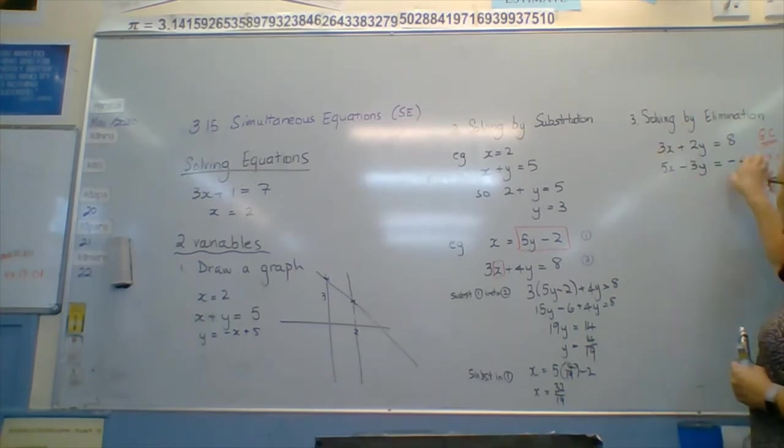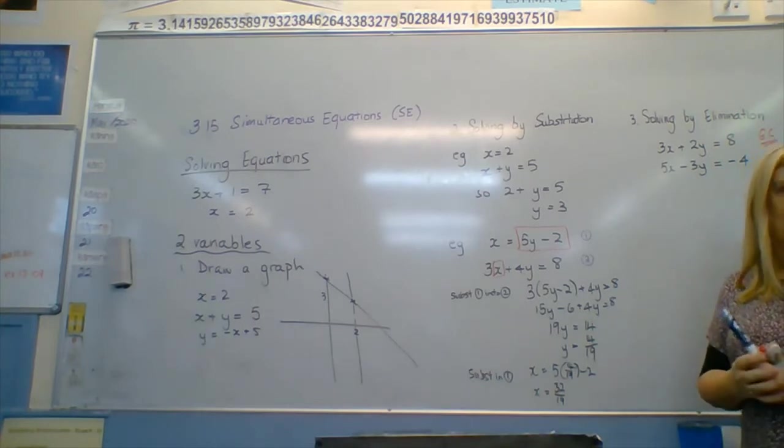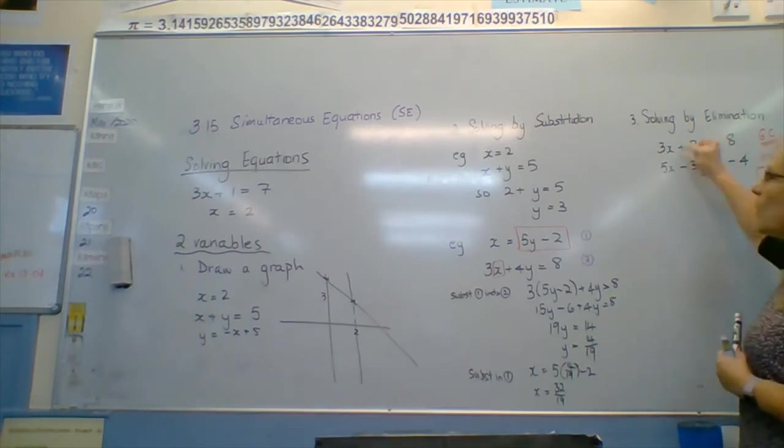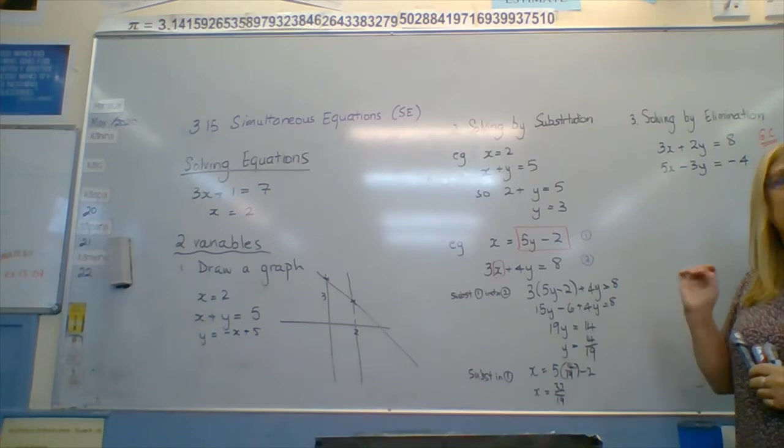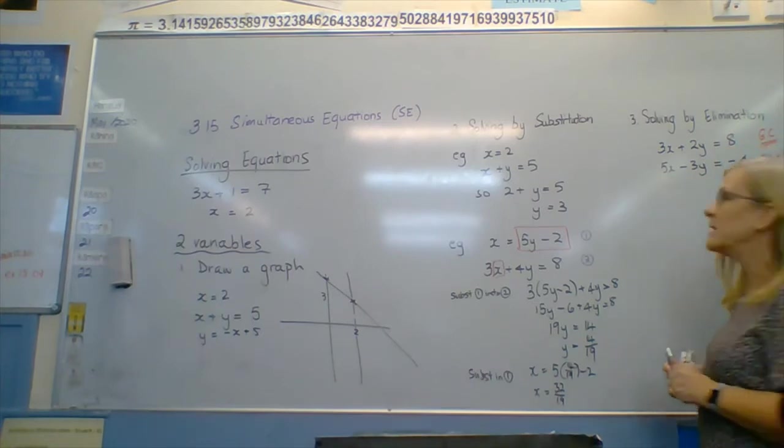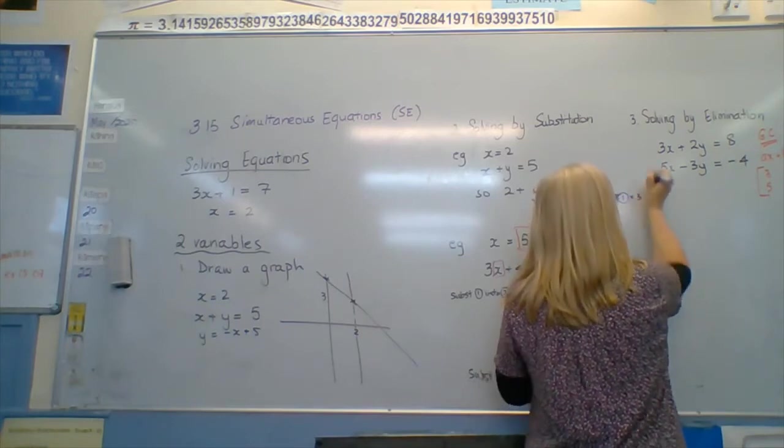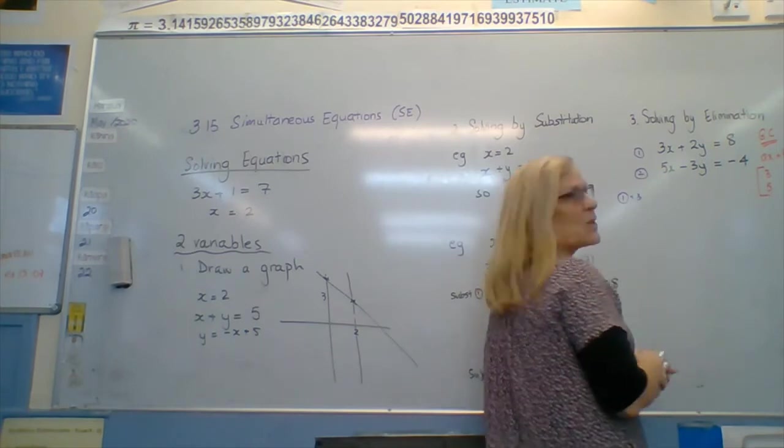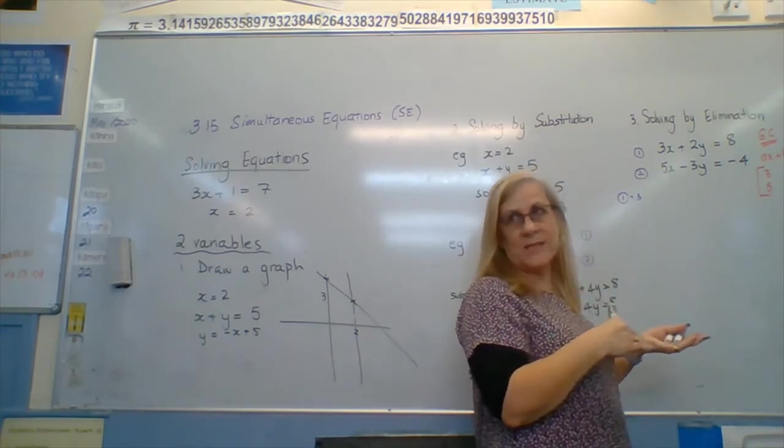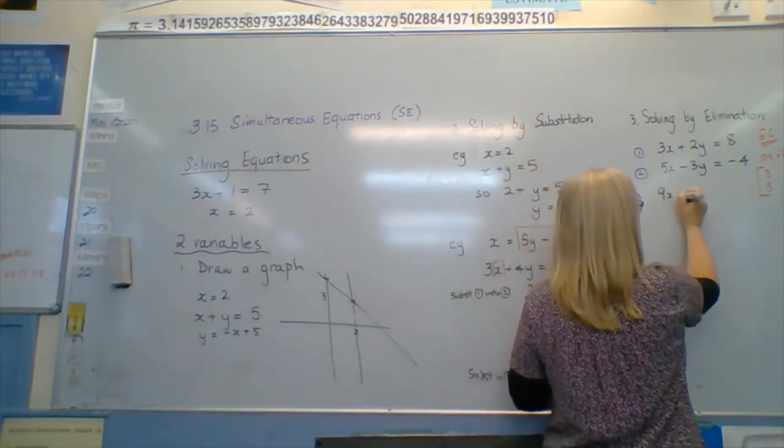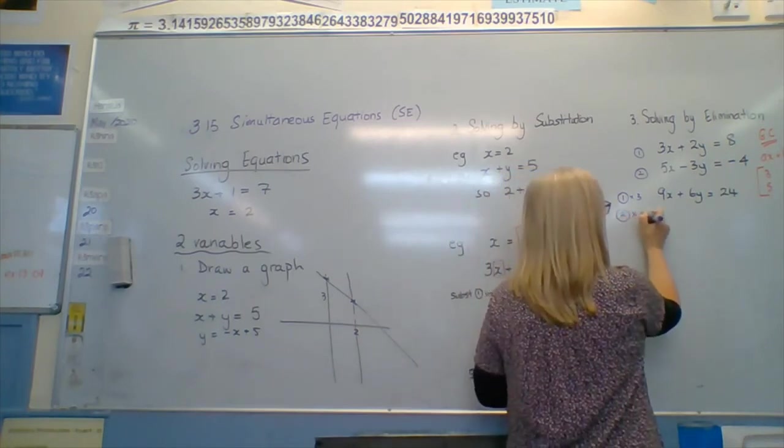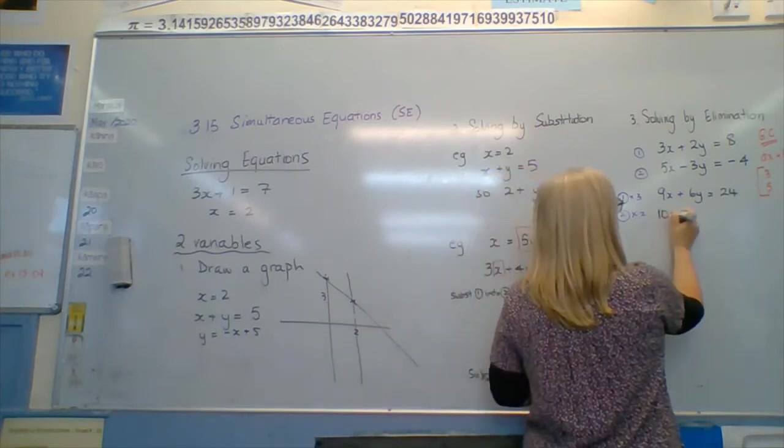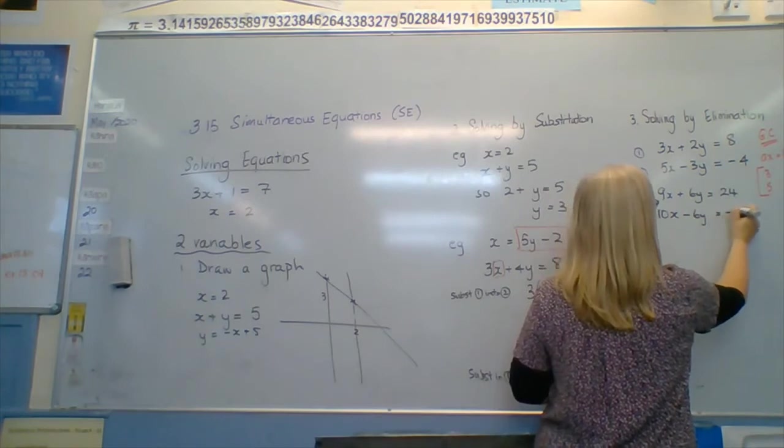We need to be able to get rid of either x or y. So we're going to take multiples of these equations to do that. We're going to pick on y because it's got littler numbers and I like to multiply littler numbers. So I want these both to say the same coefficient, so it's going to be 6. Therefore I'm going to multiply this one by 3, everything including the end, and this one by 2. If I multiply this one by 3, I get 1 times 3. I'm telling you what I'm doing because if I make a mistake and I'm being marked, I can find out what that mistake is. So we've got 9x plus 6y equals 24. And I'm going to multiply 2 by 2, getting 10x minus 6y equals negative 8.